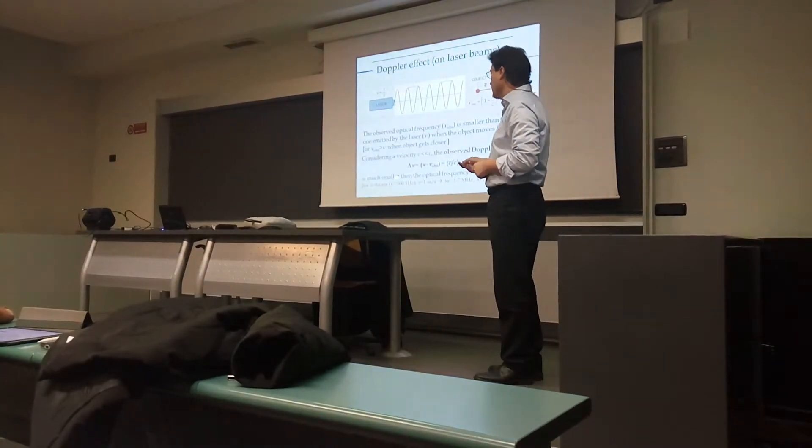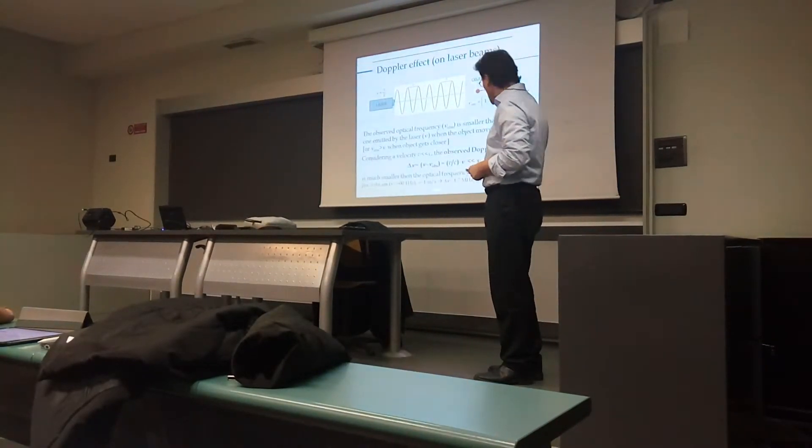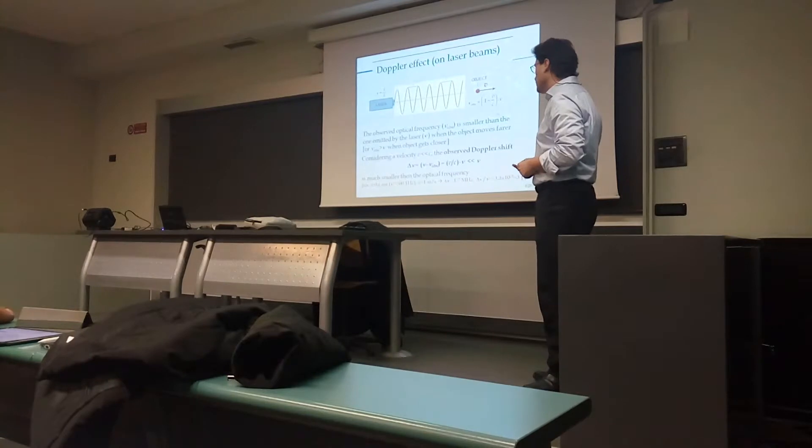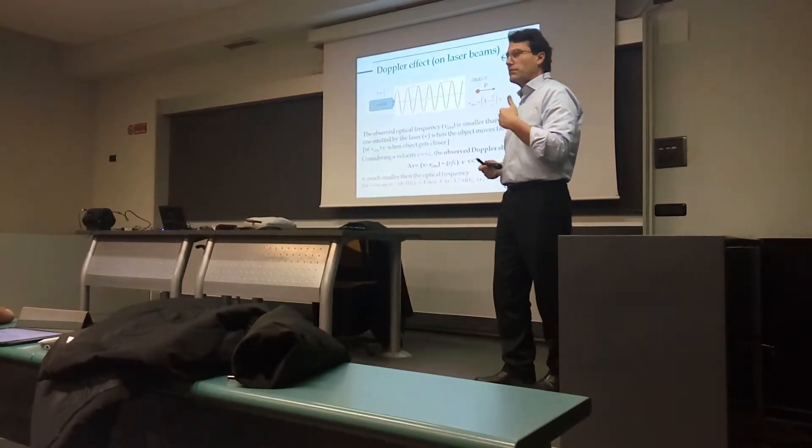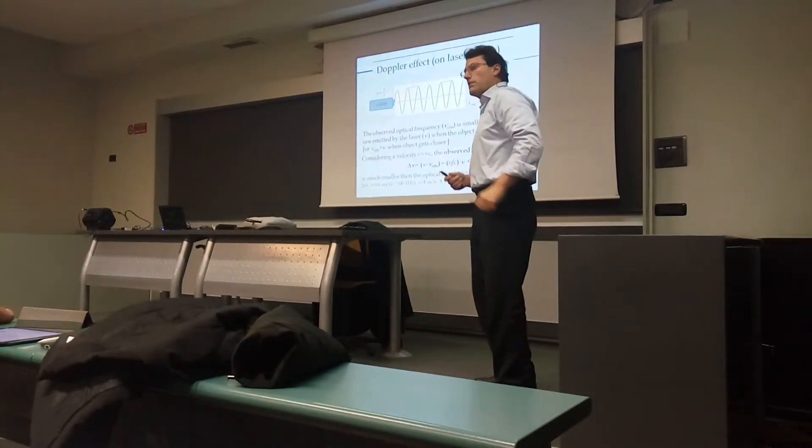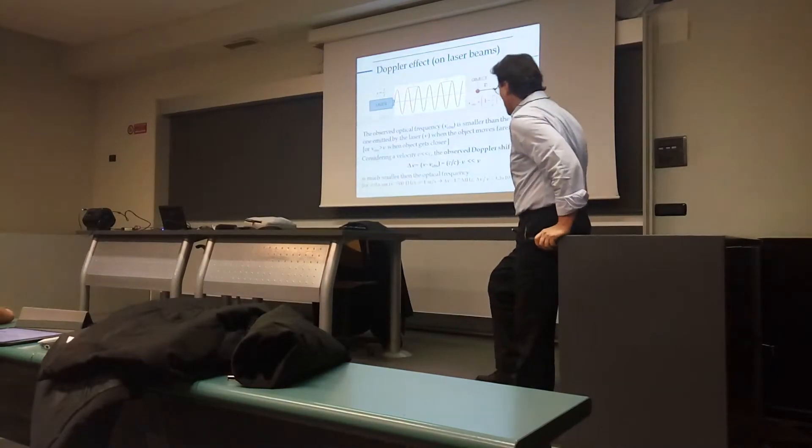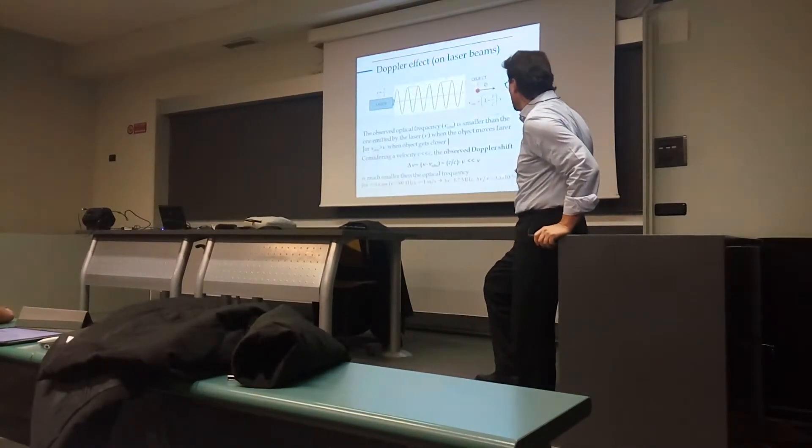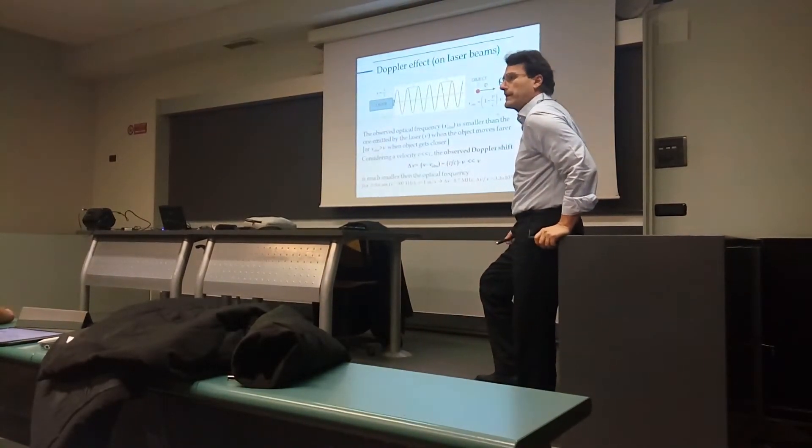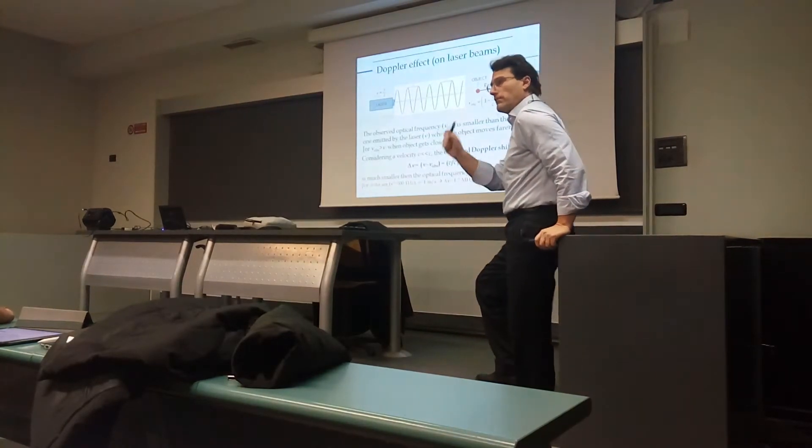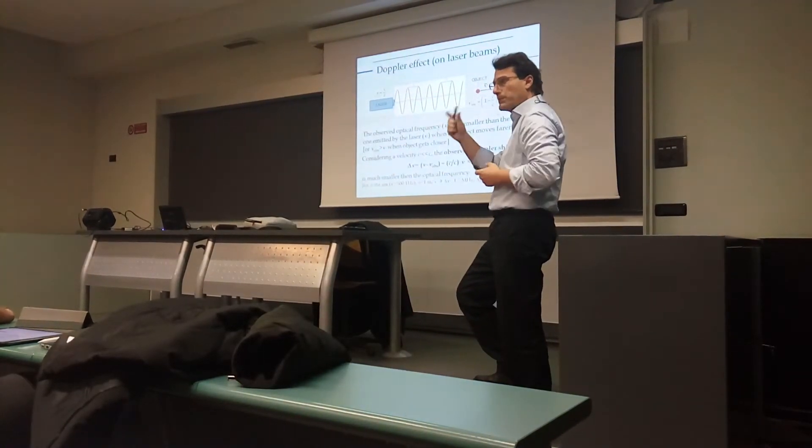So, 2 megahertz out of 500 Terahertz. If we do the ratio delta NU over NU, relative frequency variation or relative Doppler shift, we see that this is in the order of 3 parts per billion. So, it's a very tiny variation of the optical frequency,